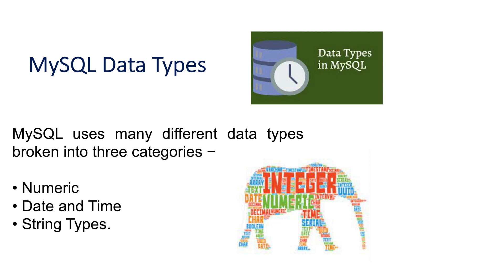Hello guys, myself Amrita, welcome back to our channel TechnoSage. In today's video we are going to discuss data types in MySQL. A data type is basically a classification which tells you what type of data you can store — for example, numbers, strings, characters, or date and time. MySQL has divided data types into three categories: numeric, date and time, and strings.